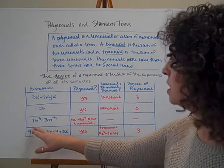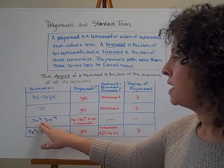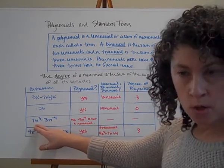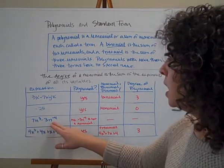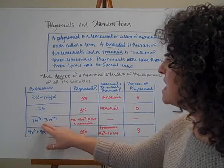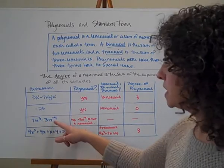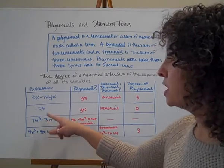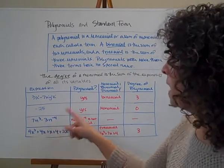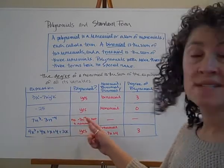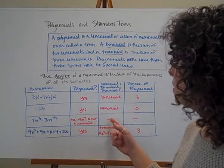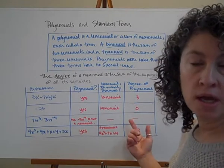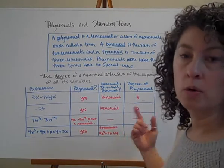Next expression: 7n cubed minus 3n to the negative fourth. 7n cubed is a monomial. However, negative 3n to the negative fourth is not a monomial, because we're technically dividing by n — it's 3 over n to the fourth power. So no, this is not a polynomial, which means we can't find its degree, and it can't be classified as a monomial, binomial, or trinomial.